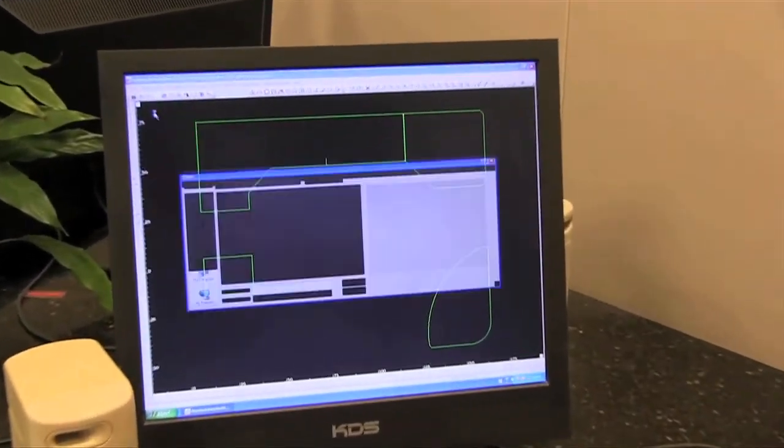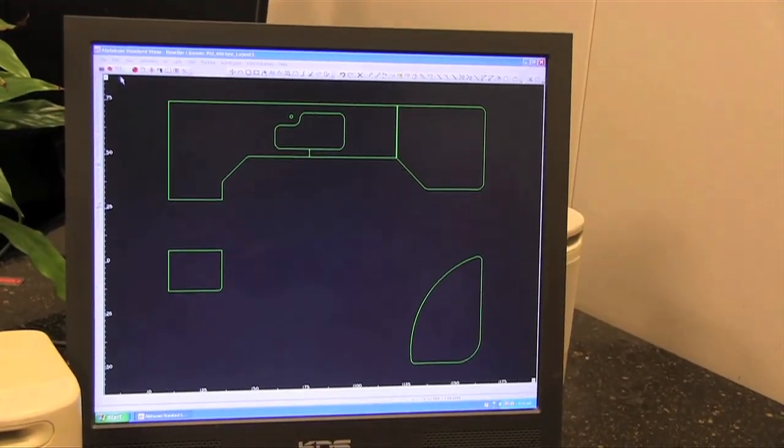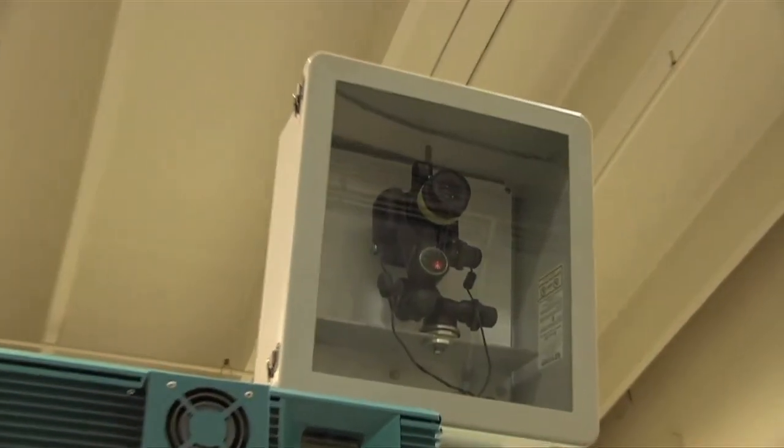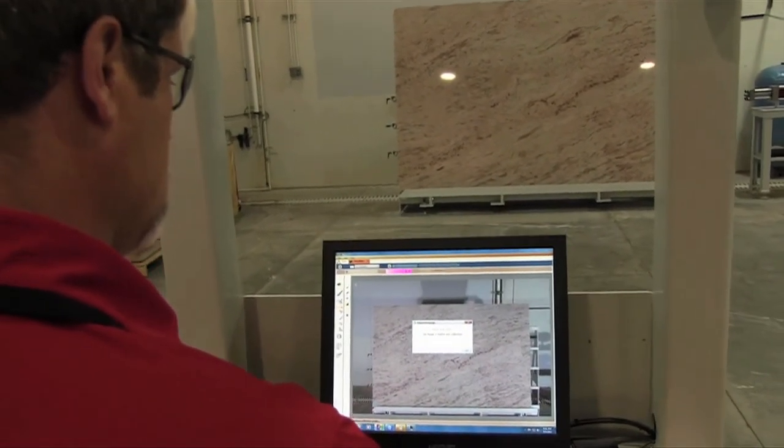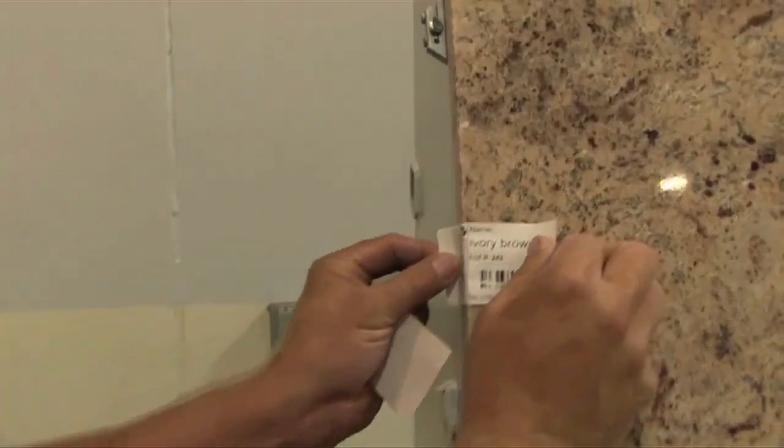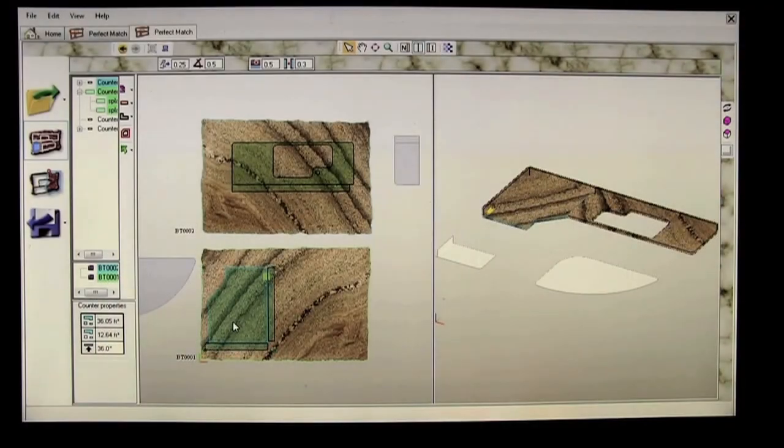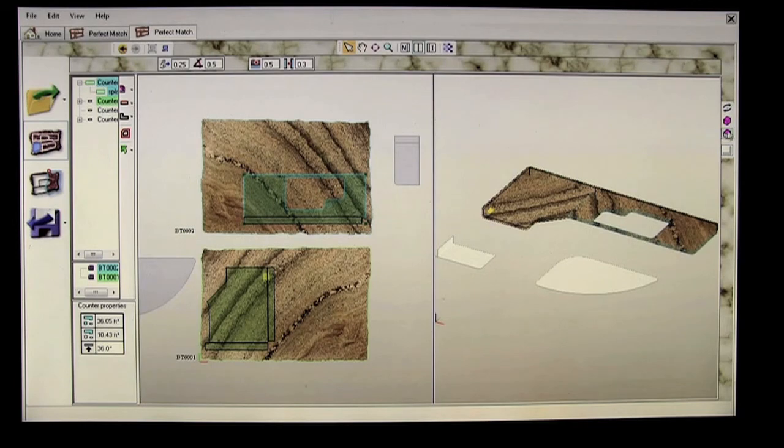Once the digital template of your project is captured, our CAD department will take the digital template, insert the sink dimensions, and produce a complete drawing of your project. The next step is to take a high-definition photograph of your stone, capturing every unique natural characteristic. Once photographed, your stone is then barcoded with your project information.